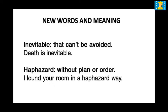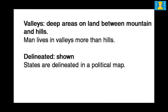The first word is 'inevitable', which means that which cannot be avoided. An example is: death is inevitable. The next word is 'haphazard', which means without plan or order. An example is: I found your room in a haphazard way. The next word is 'valleys', which means deep areas on land between mountains and hills. For example: man lives in valleys more than hills.